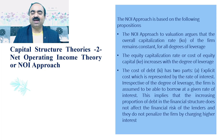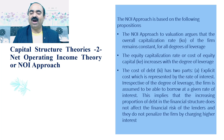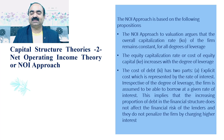The cost of debt, shortly known as KI, has two parts. Part A: Explicit cost, which is represented by the rate of interest. Irrespective of the degree of leverage, the firm is assumed to be able to borrow at a given rate of interest. This implies that the increasing proportion of debt in the financial structure does not affect the financial risk of the lenders, and they do not penalize the firm by charging higher interest.